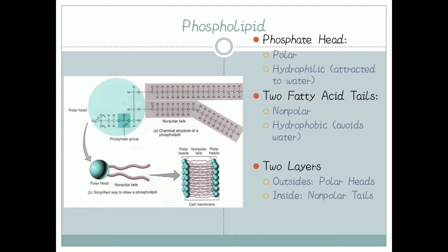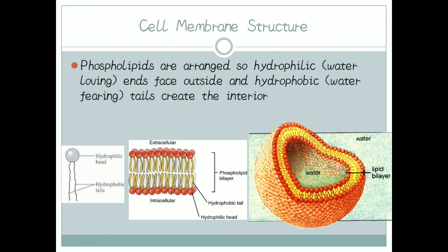As we can observe in the given diagram, the outer dotted green structure shows the polar head, and the tail-to-tail structures inward are the non-polar tails. Phospholipids are arranged so that the hydrophilic, water-loving ends face outside, and the hydrophobic, water-fearing tails create the interior of the cell membrane.